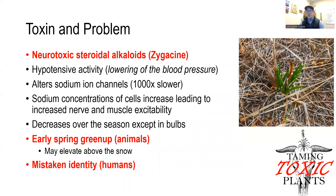The principal toxin is called zygosine, and this is a neurotoxic steroidal alkaloid. Ultimately this leads to a lowering of blood pressure, or what we would call hypotensive activity. Zygosine also alters the sodium ion channels up to a thousand times slower, and what this leads to is increased sodium concentrations in the cells that lead to increased nerve and muscle excitability. In the plant material above the ground, the toxin tends to decrease through the season; however, the toxin in the bulbs stays consistently high throughout the year.